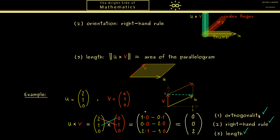You now know how to calculate the cross product of two vectors in R3, along with three important properties of the resulting vector. To close, note that the cross product is not commutative — because of the right hand rule, the order of u and v matters. You can check that with this example. You'll also find the link to the quiz for this video in the description. I hope to see you in the next video when we go back into the abstract world. Have a nice day, bye!